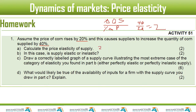In this case, is the supply elastic or inelastic? Well, if it's two, then it has to be elastic. And why do we say it's elastic? It's elastic because it's greater than one. It will be inelastic if it was less than one. If it was one, it will be unitary elastic.